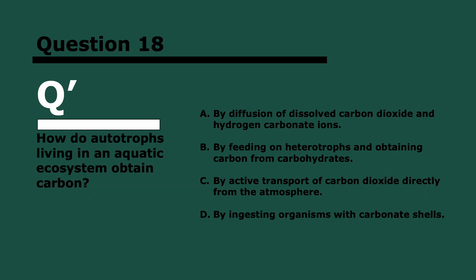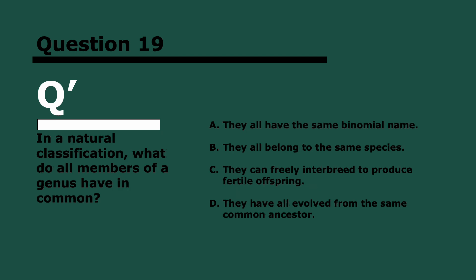Question 18. How do autotrophs living in an aquatic ecosystem obtain carbon? Three, two, and one. It's diffusion of carbon dioxide, which can be dissolved in water, and hydrogen carbonate ions. It's not by feeding on heterotrophs because they're autotrophs. They don't active transport carbon dioxide from the atmosphere because they're not anywhere near the atmosphere. They don't ingest organisms because that would be heterotrophy. It's through diffusion.